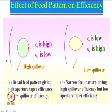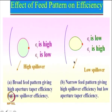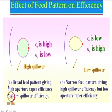Here we have two reflectors. In this case the feed has a larger beam — the half power beam width is relatively larger — and the spillover efficiency is relatively poor, meaning there is high spillover. In this other case the half power beam width is relatively small, spillover is low giving high spillover efficiency, but the taper efficiency is relatively low.